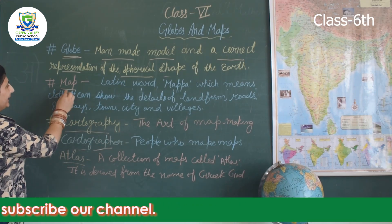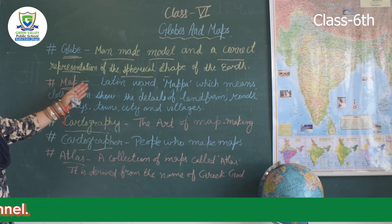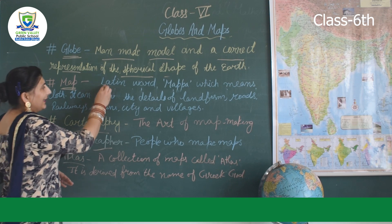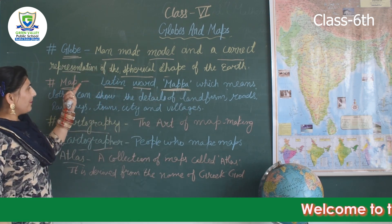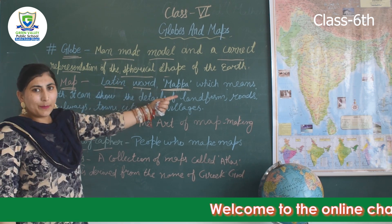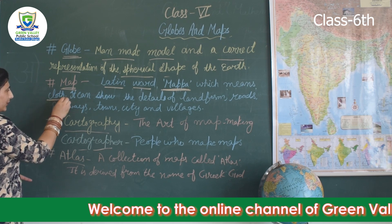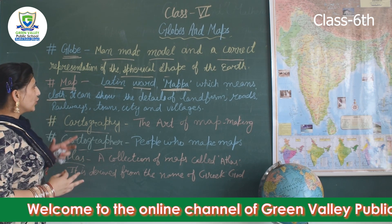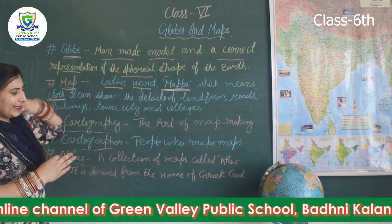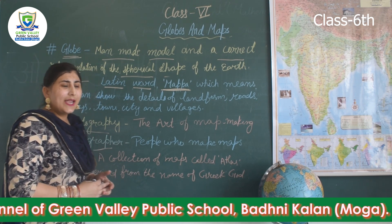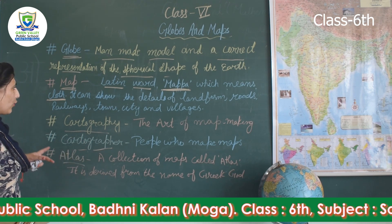Our next point is map. The word 'map' is derived from the Latin word 'mappa'. A map is drawn on a flat surface — you need a surface to draw a map, but for a globe that is not required.